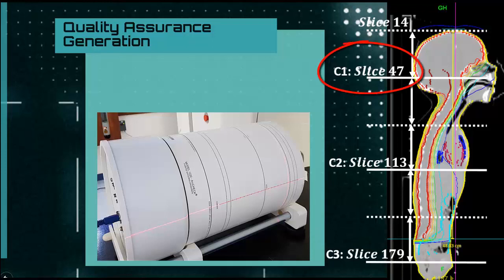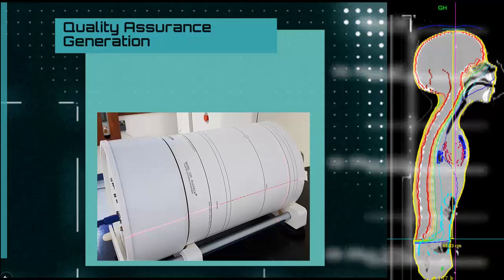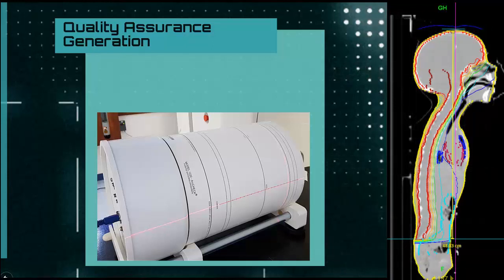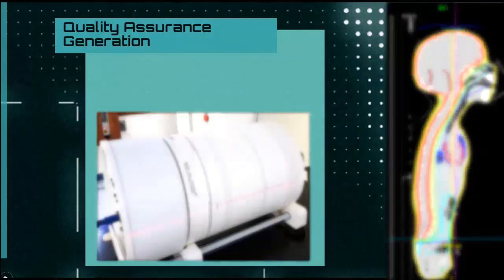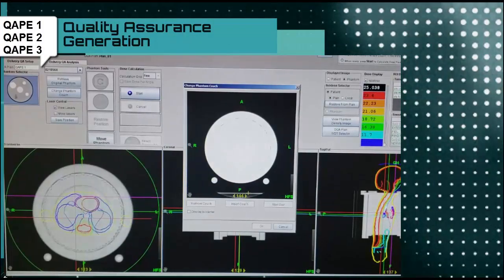The three centers are on tomograph slices 47, 113, and 179. Once this is clear, we'll head to our planning station, open the DQA software, and begin to generate our quality assurance. At this point, we select our patient for whom we've done the quality assurance. The first thing we do is place a name for the quality assurance — in this case, we'll utilize QAPE1, 2, and 3.